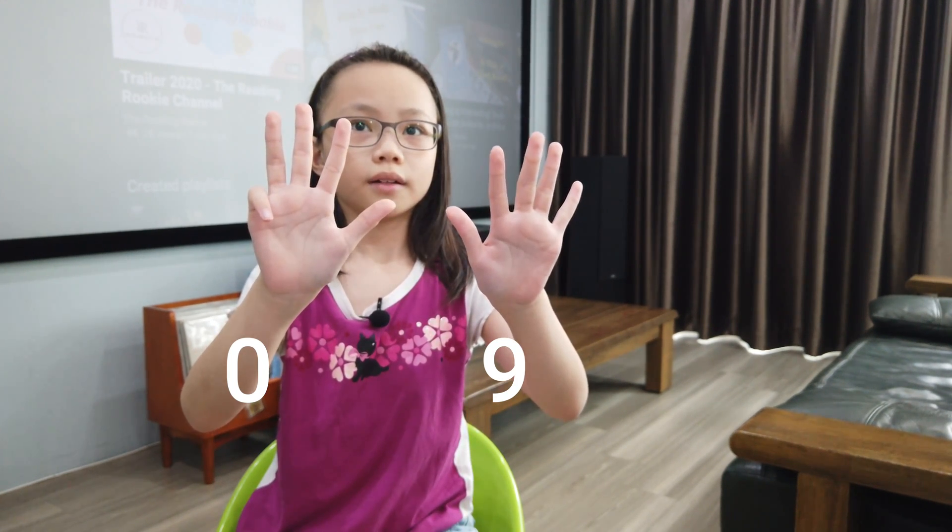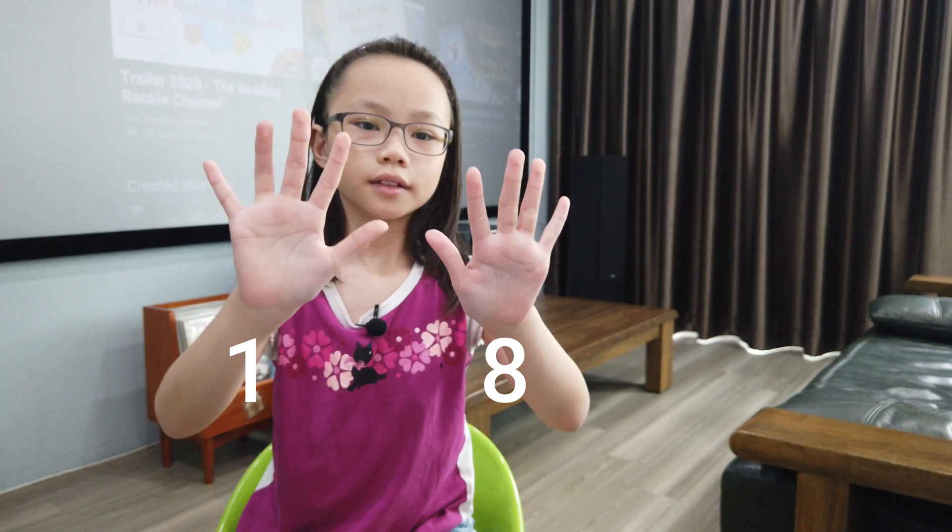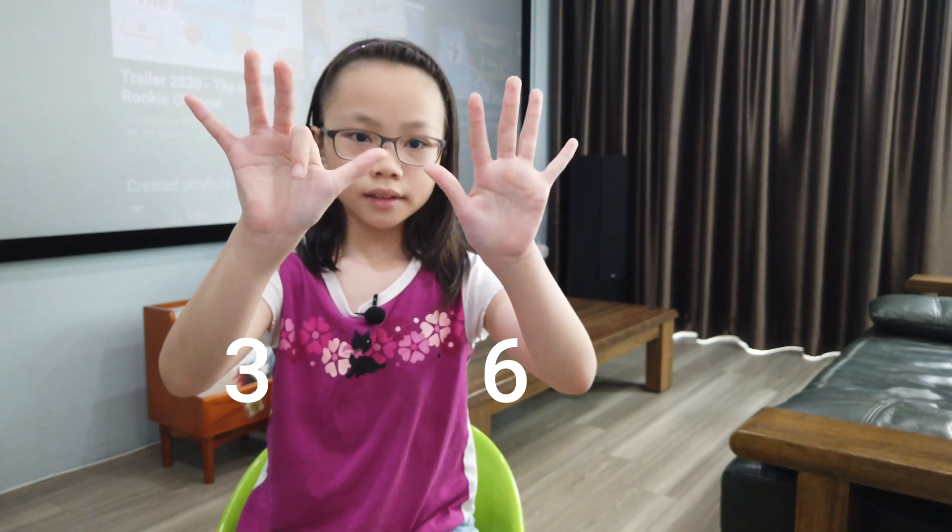For 1 times 9, put your pinky down. 1 times 9 is 9, 2 times 9 is 18, 3 times 9 is 27, 4 times 9 is 36.